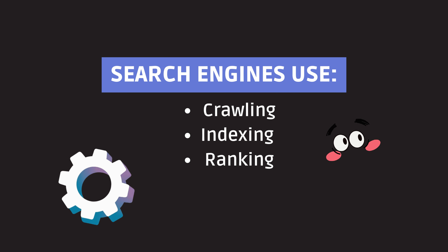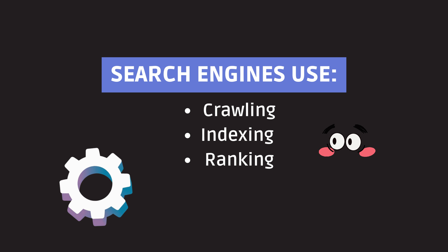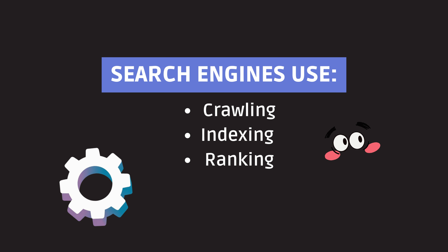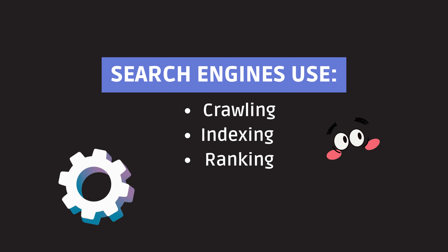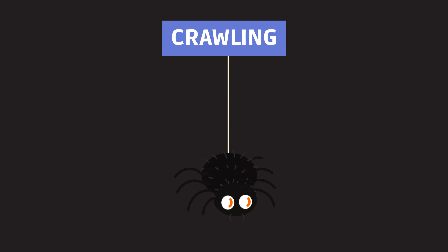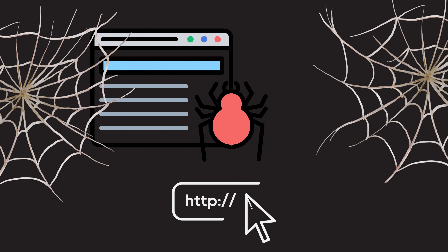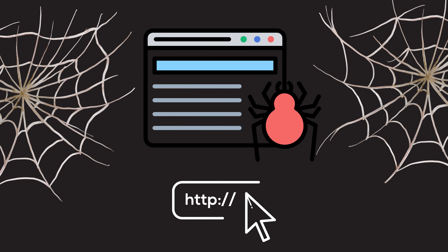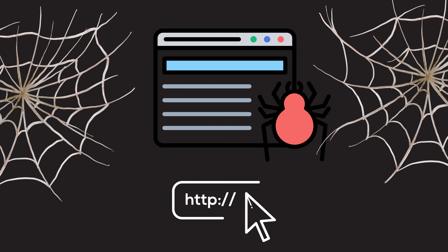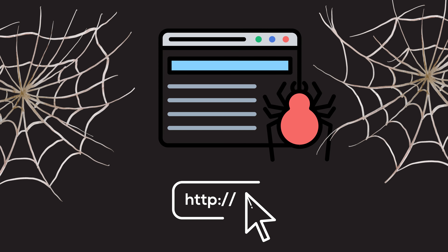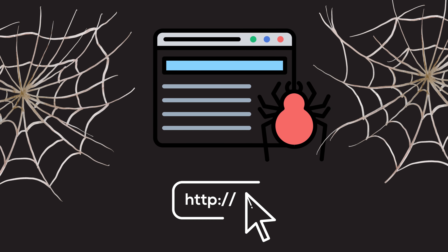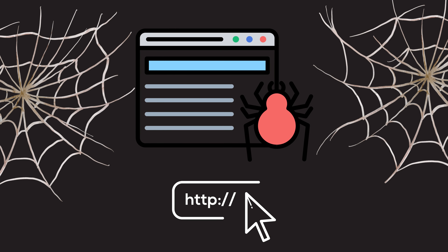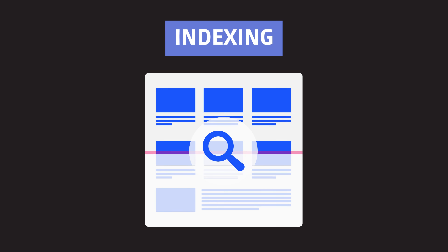Search engines are like the wizards of the internet. They use complex algorithms to perform three main functions: crawling, indexing, and ranking. First, there is crawling. Imagine search engines like little spiders that crawl all over the web, following links from one page to another. This process helps them discover and gather information about websites and web pages.